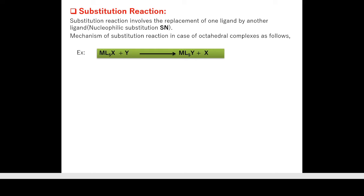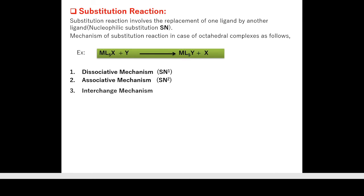Substitution reactions in octahedral complexes can follow three different mechanisms: first, dissociative mechanism; second, associative mechanism; and third, interchange mechanism. The dissociative mechanism is also called SN1 (substitution nucleophilic unimolecular), and the associative mechanism is also called SN2 (substitution nucleophilic bimolecular).